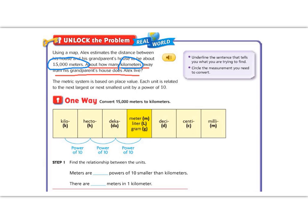So the metric system is based on place value. Each unit is related to the next one by being smaller by a power of 10. So if we start here in the middle where it says meter, liter, gram.